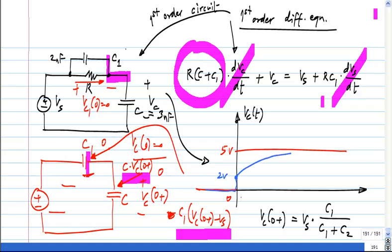So it will creep up to 5 volts with an exponential and what will be the time constant? Let us say R is 1 kilo ohm. What is the time constant going to be? 5 microseconds, 5 nanofarads times 1 kilo ohms which is 5 microseconds.